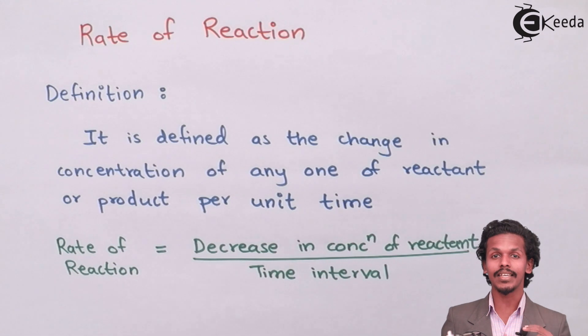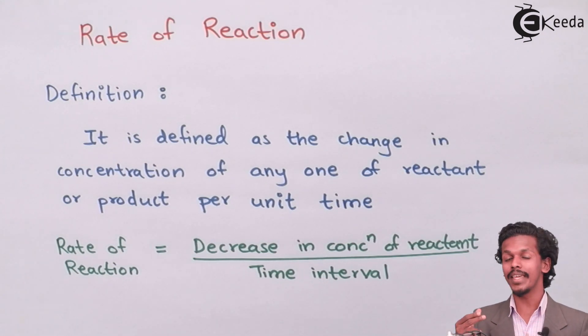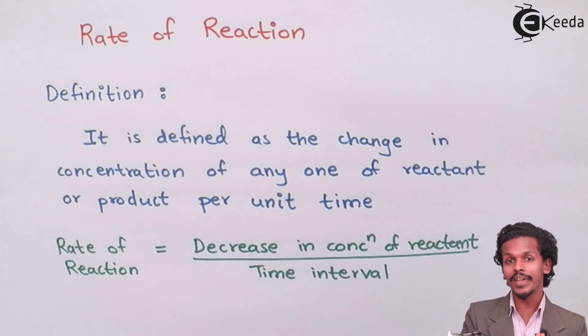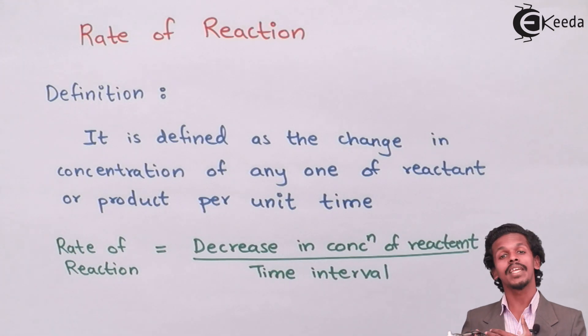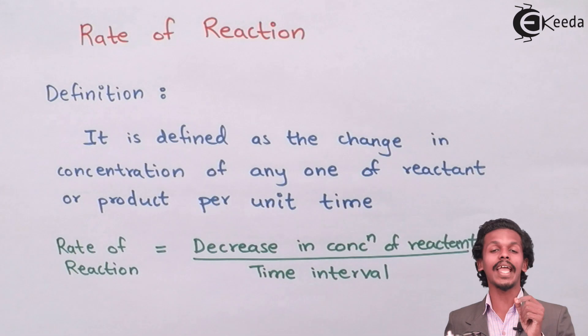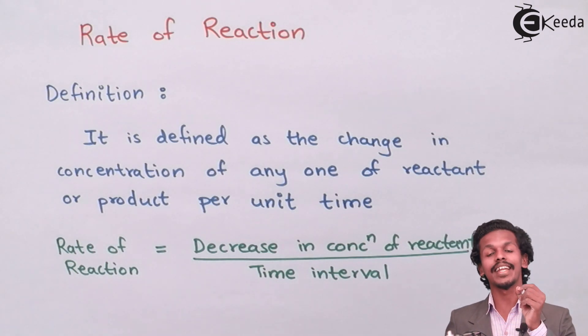the concentration of A goes on decreasing while the concentration of B goes on increasing according to the time. So this change from the initial state of A to the final state of A or this change from the initial state of B to the final state of B with respect to time is known as rate of reaction.